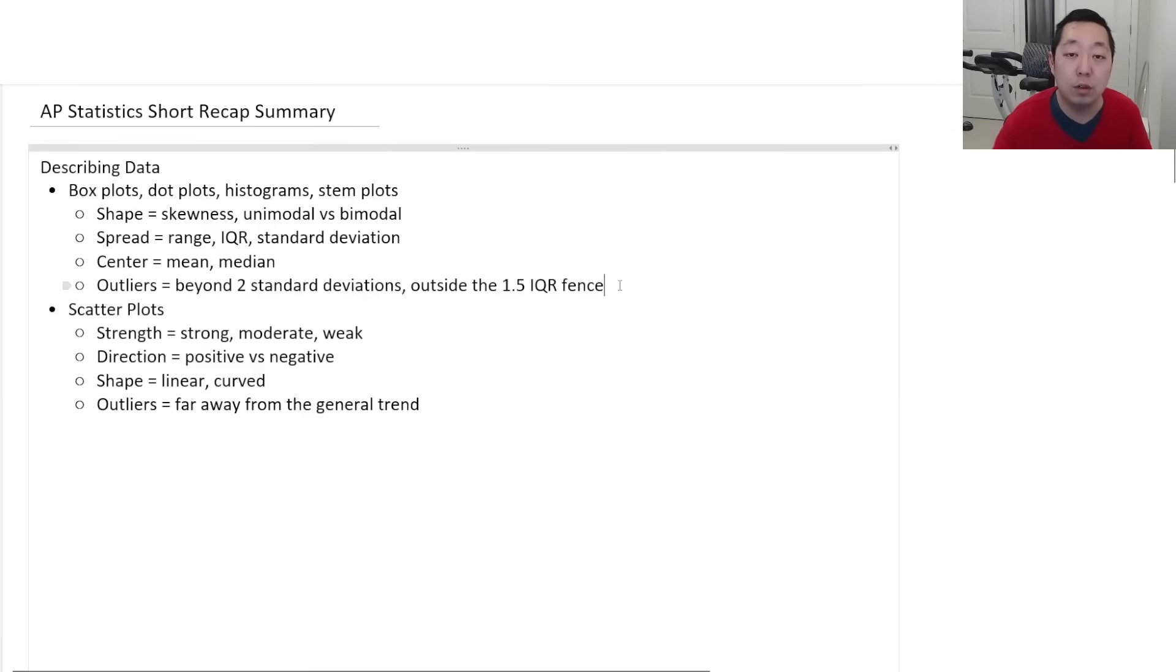Make sure you know how to do all of those things, as well as the five number summary, which is the min, max, Q1, median, and Q3.